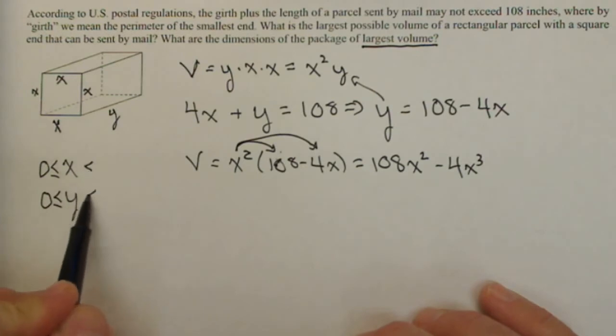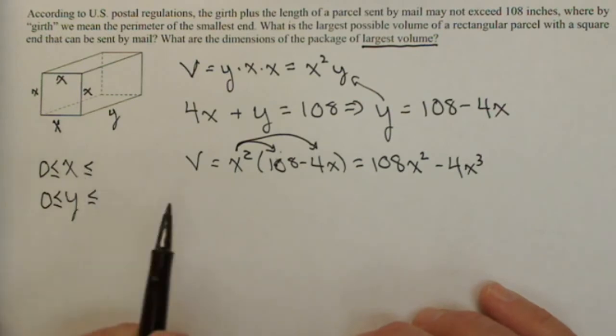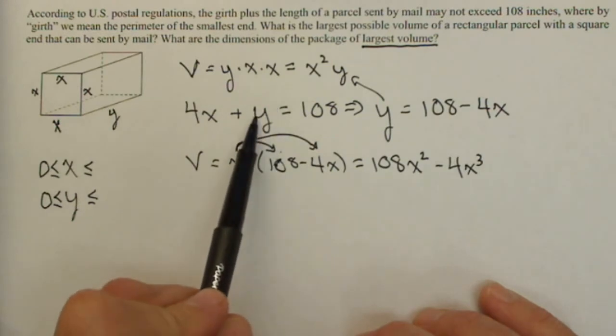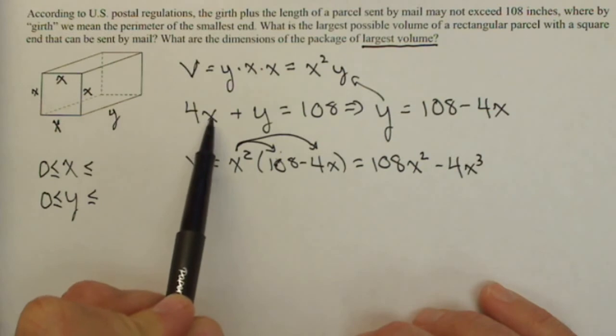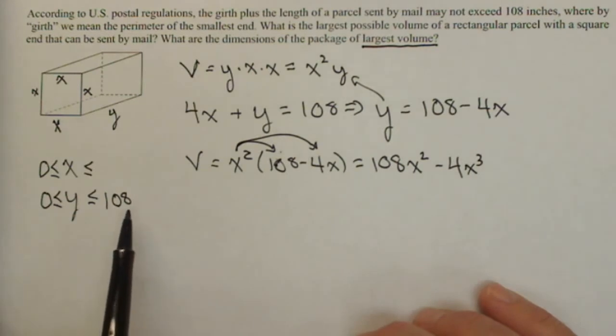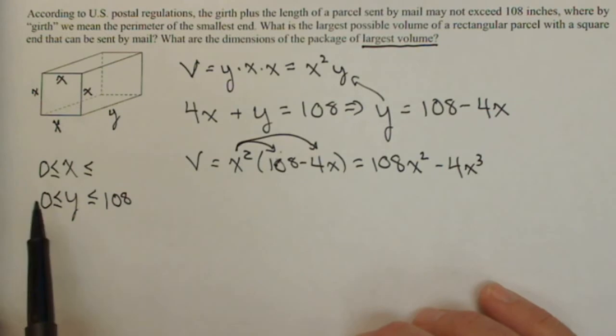Both x and y have to be greater than 0. If they're 0, we have no volume. Now let's think about the maximum they can be. Well, here's our constraint. So the absolute biggest y could be that would make sense to have x be positive, if x was 0, y would be 108. So that's going to be the absolute maximum y.